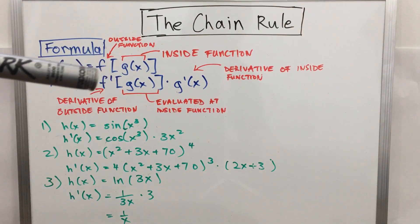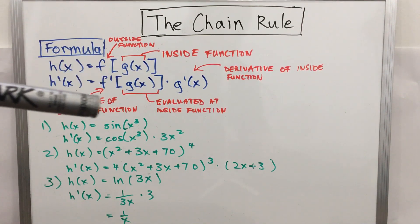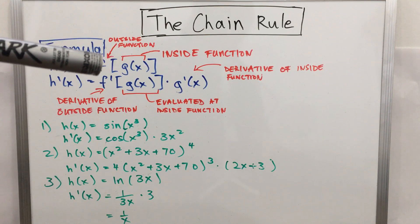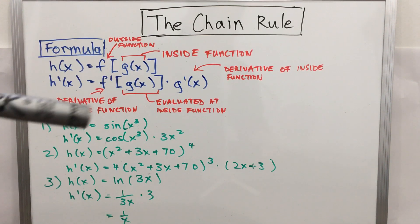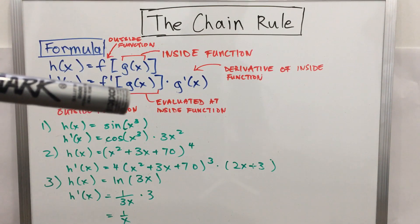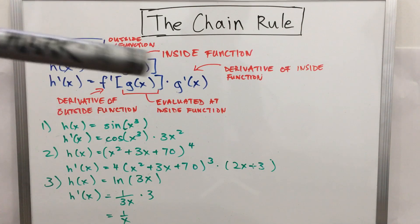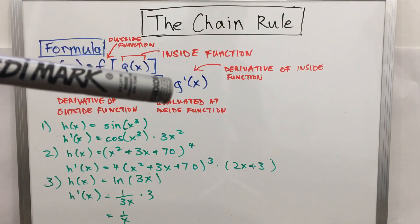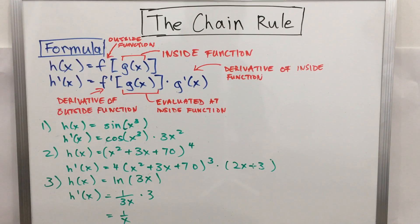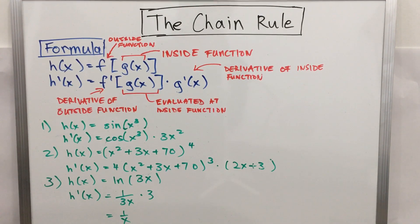So f prime is the derivative of the outside function, evaluated at the inside function, times the derivative of the inside function g'(x). We're going to learn how to apply this chain rule formula.